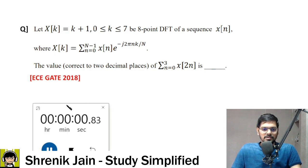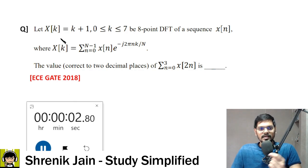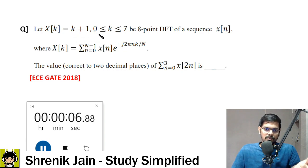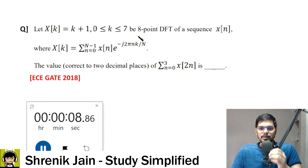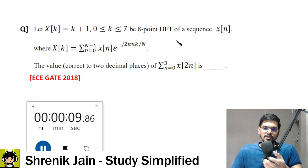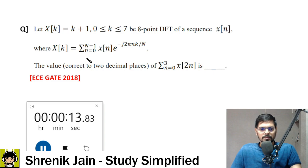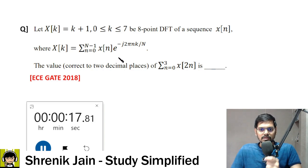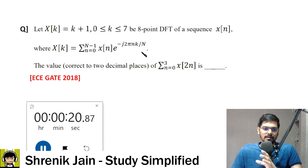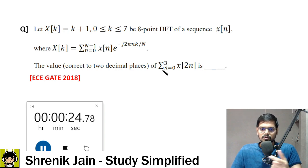The first question: Let X(k) = k+1, where k is greater than or equal to 0 and less than or equal to 7, be the 8-point DFT of sequence x(n), where X(k) = summation from n=0 to N-1 of x(n) times e to the power minus j2πnk/N. The value, correct to two decimal places, of summation from n=0 to 3 of x(2n) is dash.